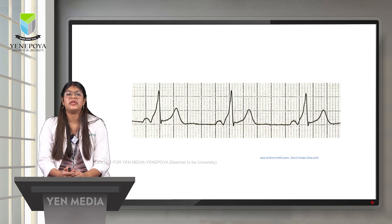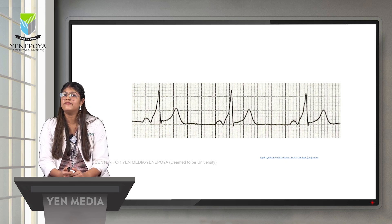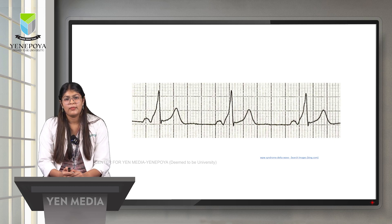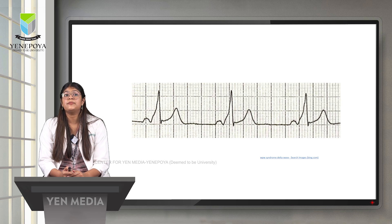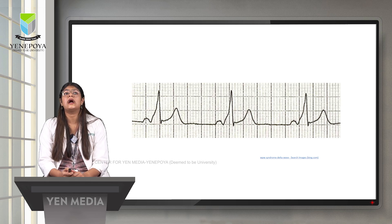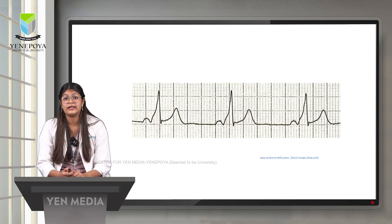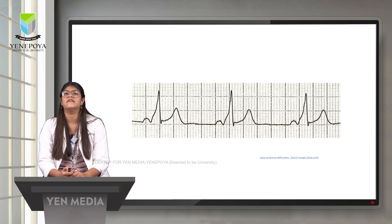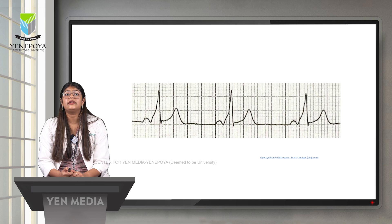On the ECG, the P wave is normal since atrial excitation occurs normally. The PR interval — from the P wave to the beginning of the QRS complex — is very short. The initial portion of the QRS complex shows a slurred upstroke, the delta wave, while the terminal deflection of the QRS complex remains normal.